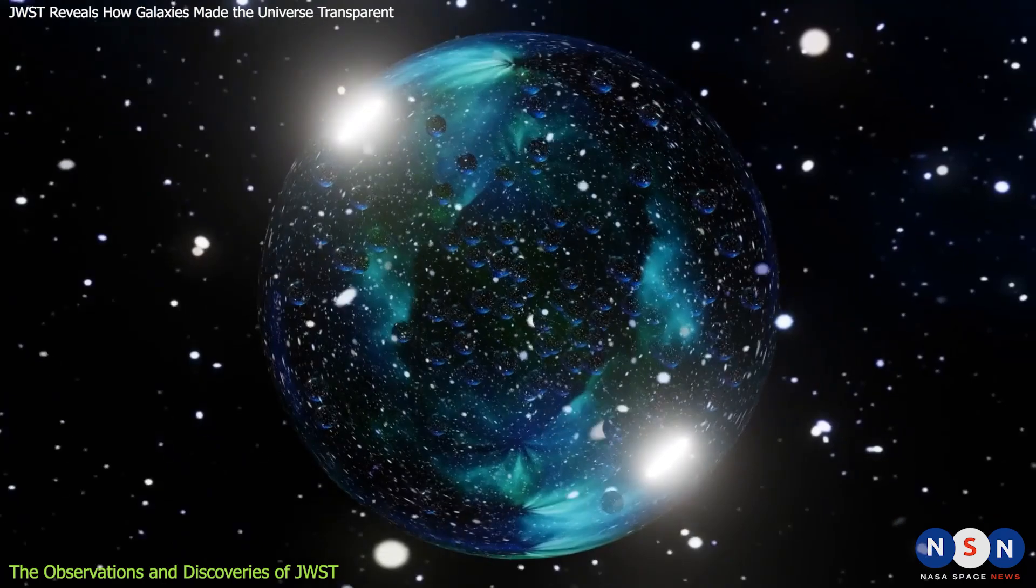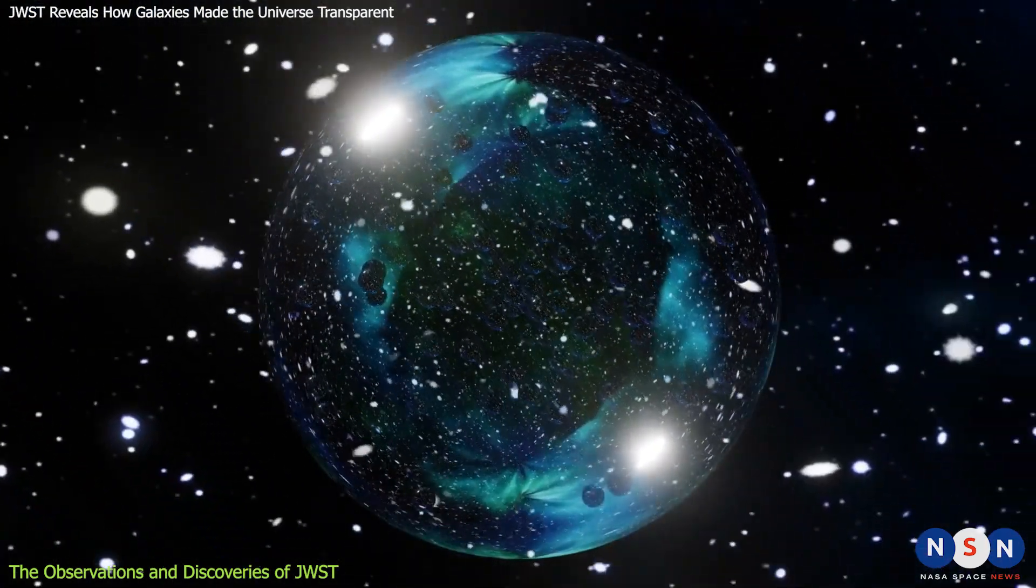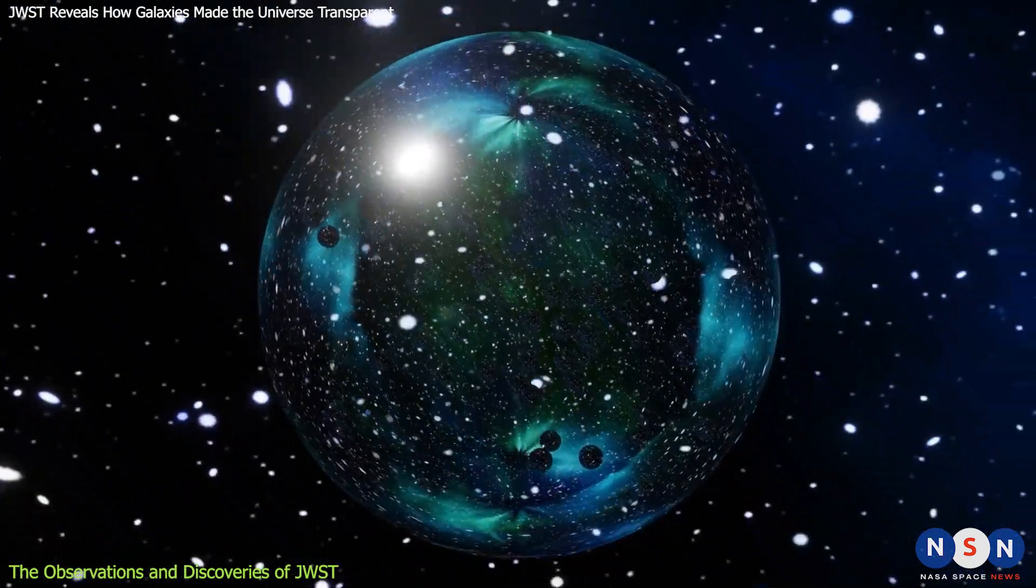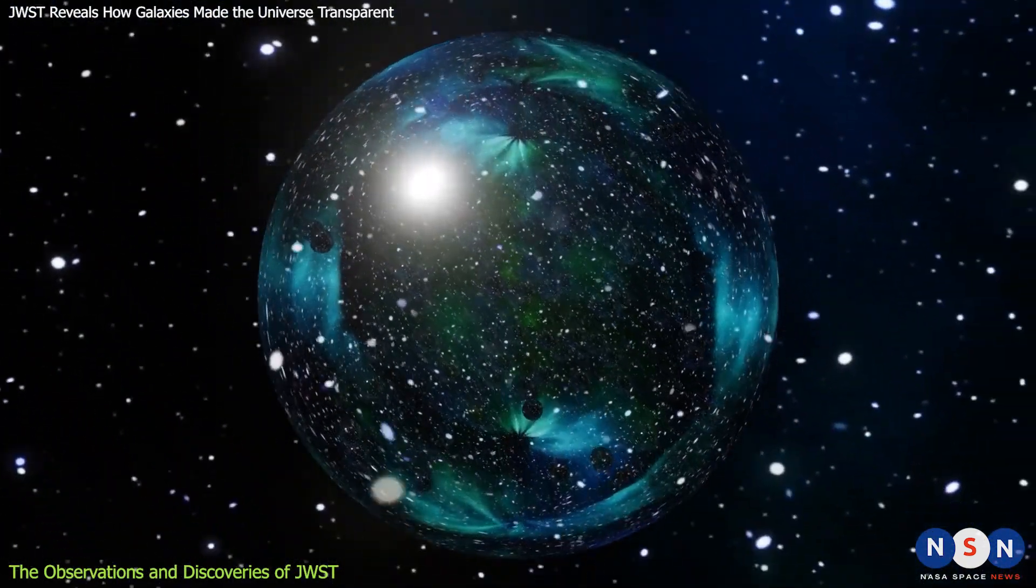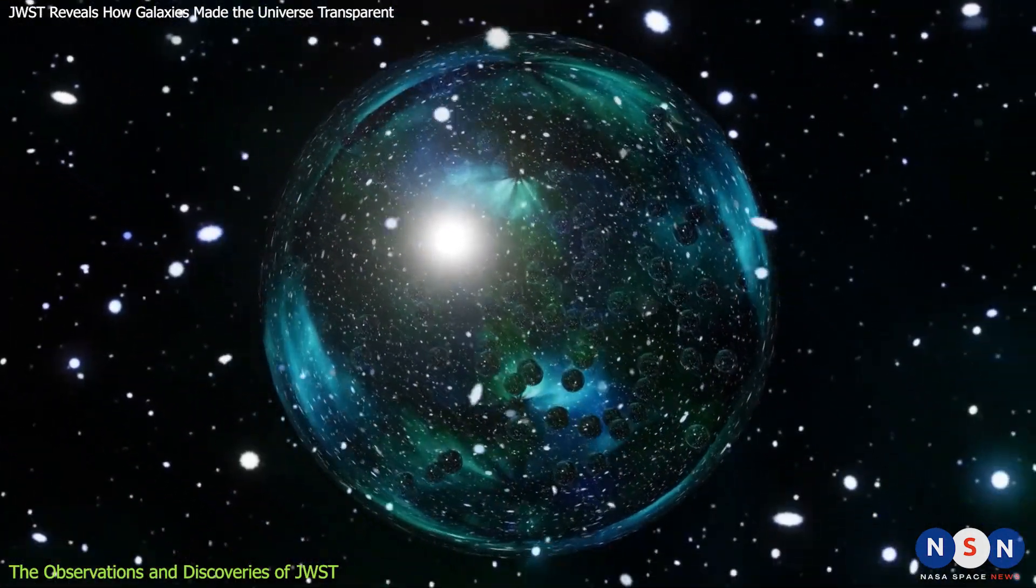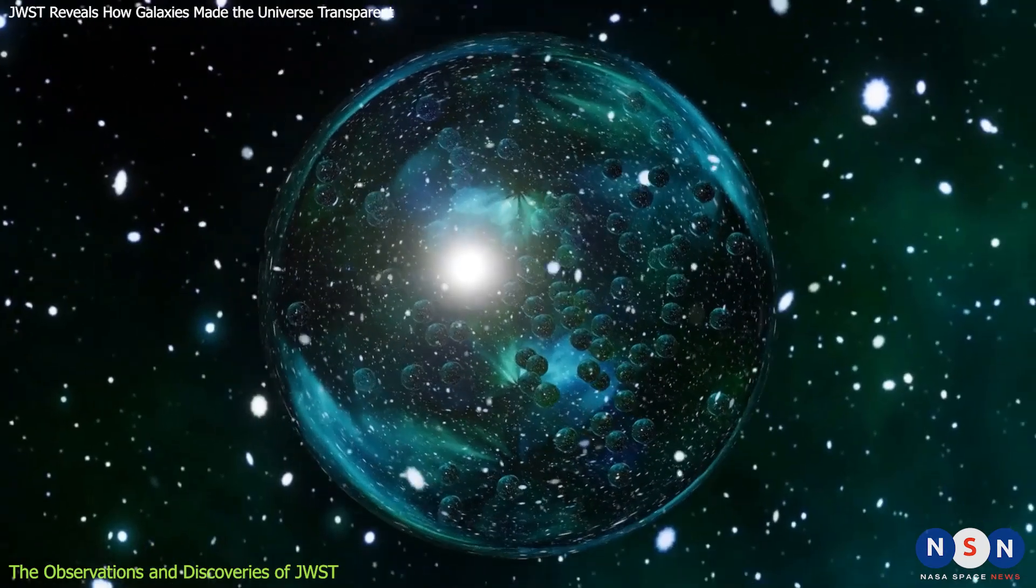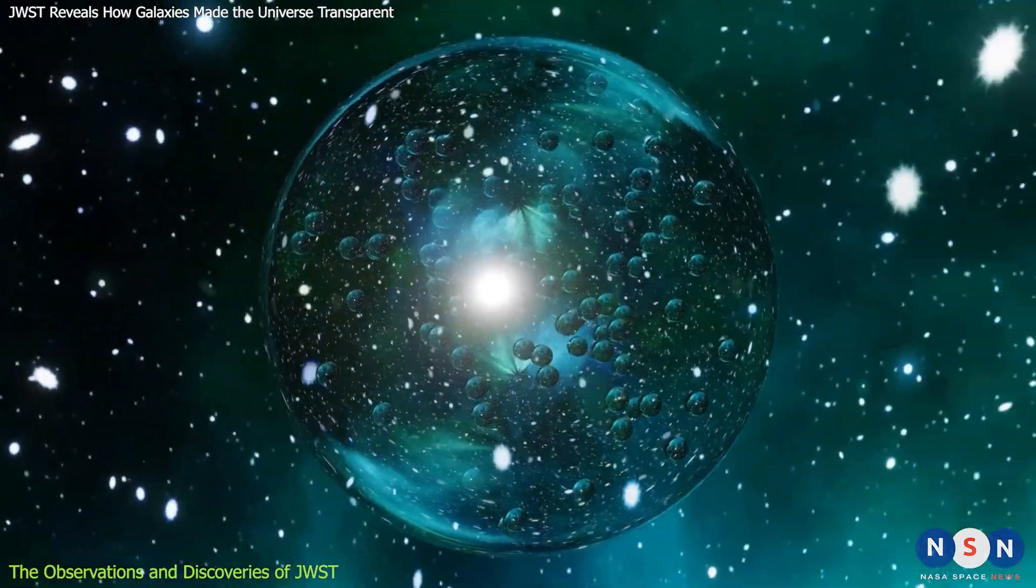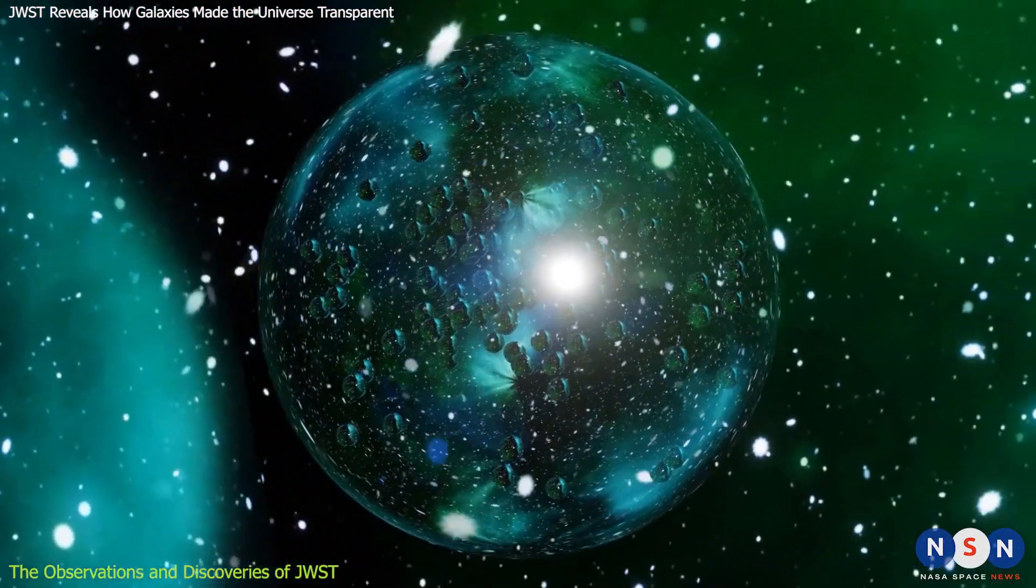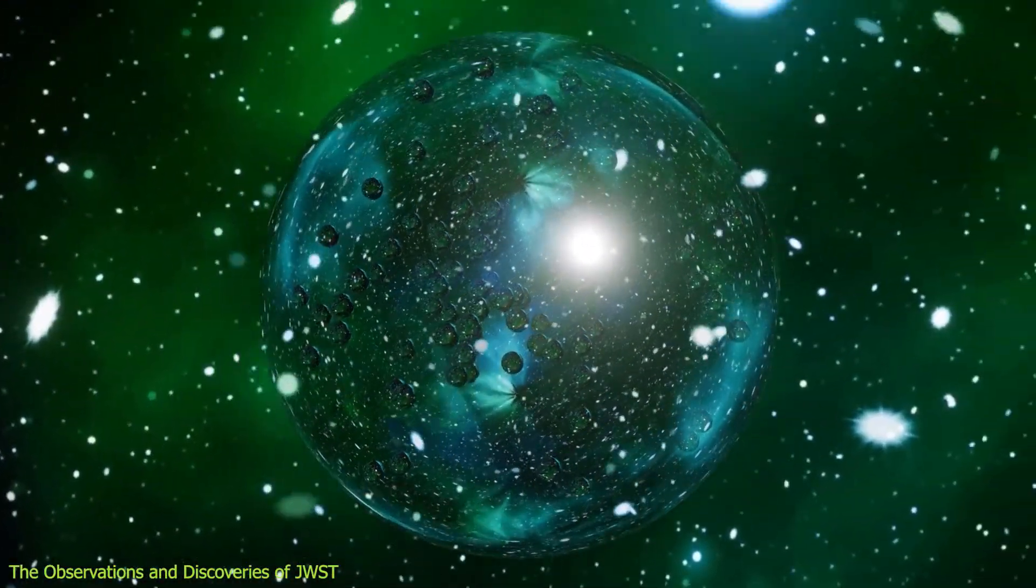The researchers concluded that these galaxies were responsible for ionizing the gas around them, and that over the next hundred million years, their bubbles grew larger and larger until they merged with each other and made the entire universe transparent. This is the first direct evidence that galaxies were the main drivers of re-ionization, and it also provides new insights into how galaxies formed and evolved in the early universe.